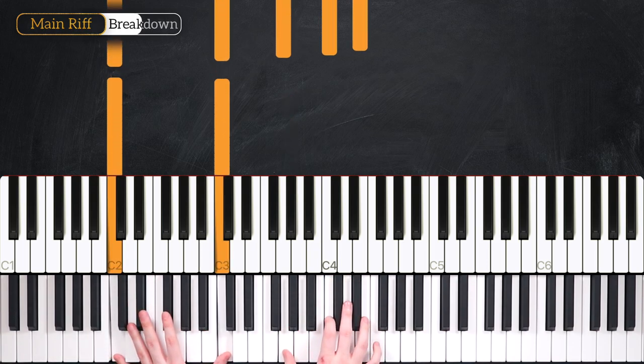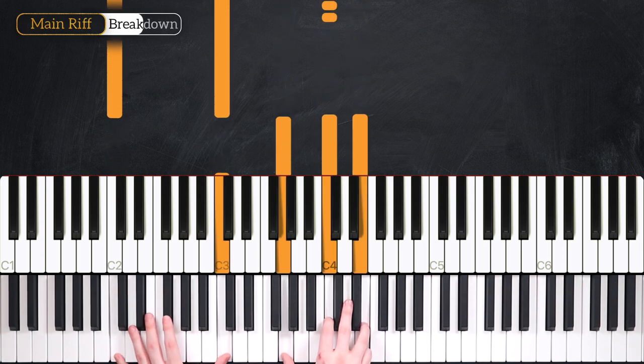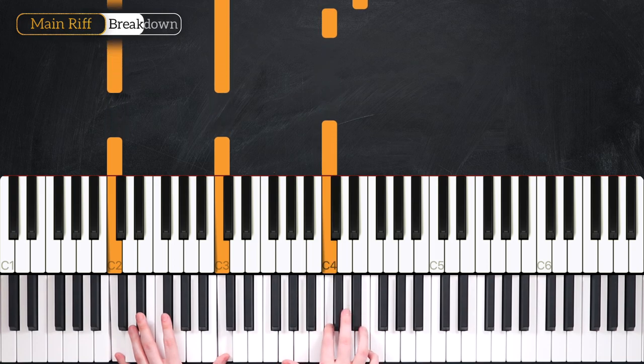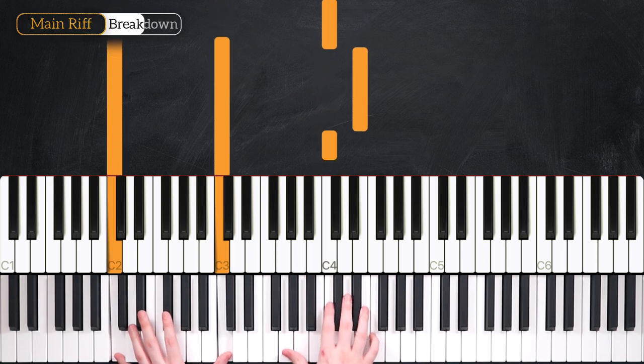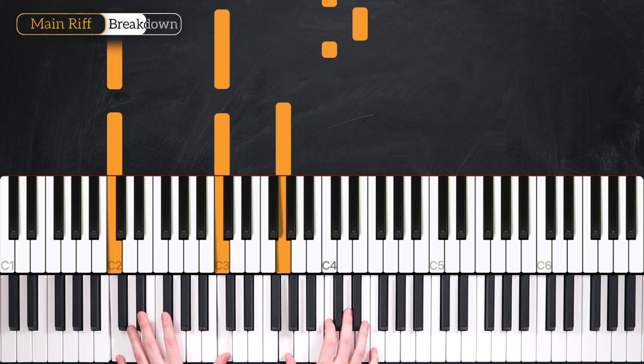And then we slide down for beat 3. Same pattern, same rhythmic pattern, slightly different notes here. We've got our C major chord. Octave C's in the left hand, starting on C, up to E. The C in the right hand comes at the same time as the C's in the left hand.